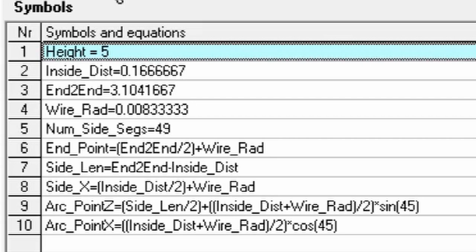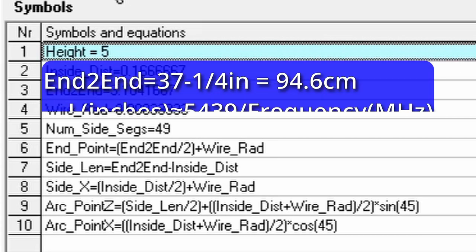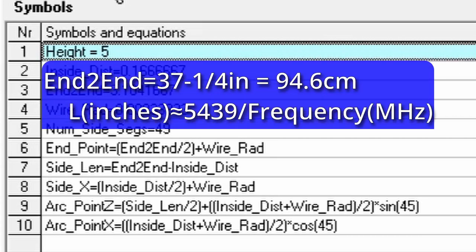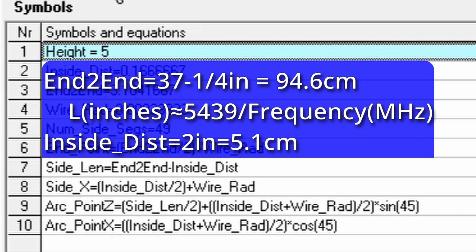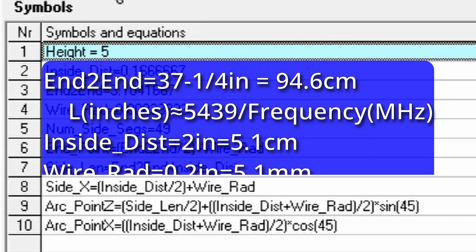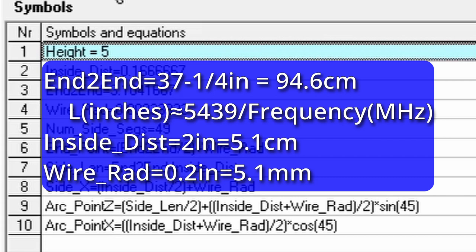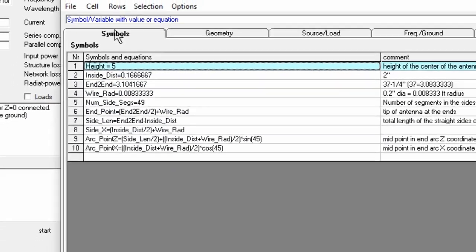I would have loved to include the 4 to 1 balun in this simulation, except I have yet to figure out how to model one of them. With the overall inside length of 37 and 1 quarter inches or 94.6 centimeters, the inside distance of 2 inches or 5.1 centimeters, this was just a feel-good number, and using some number 4 solid copper wire, which is 0.2 inches or 5.1 millimeters in diameter, let's see how our antenna should perform.